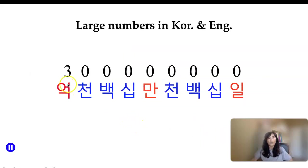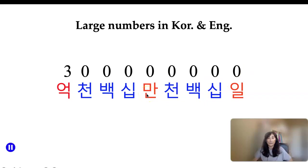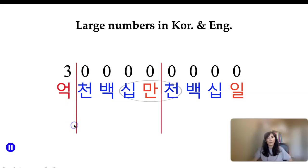The Korean place value system goes: 일, 십, 백, 천, 만, 십만, 백만, 천만, and then 억 for 100 million. So larger numbers use 억 as the next major unit after 만.